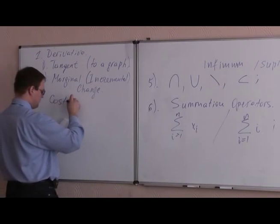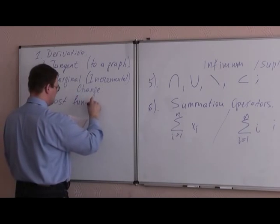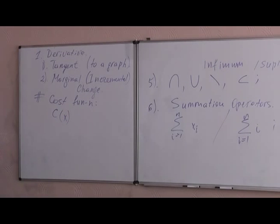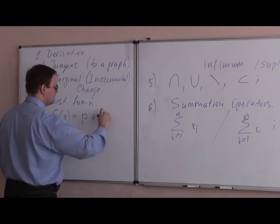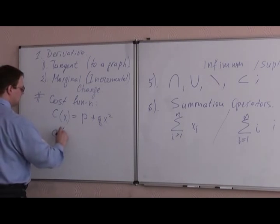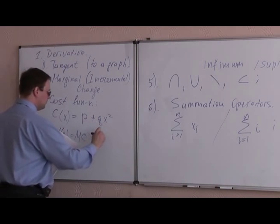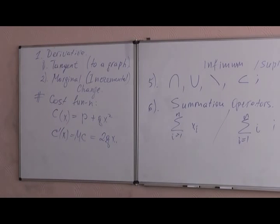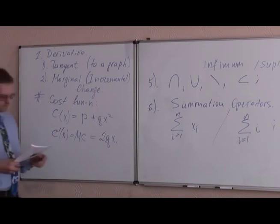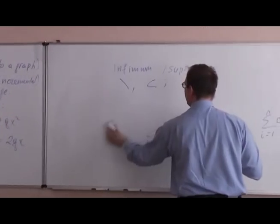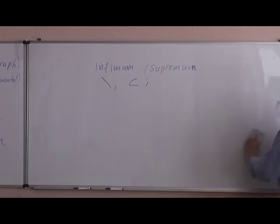We have the cost function. So the cost function is how much does it cost to produce x units of production, and here we can immediately get the marginal cost. So the marginal cost is just the derivative. But when we are talking about the rate of change, we might have two different types of the rate of change in mind.